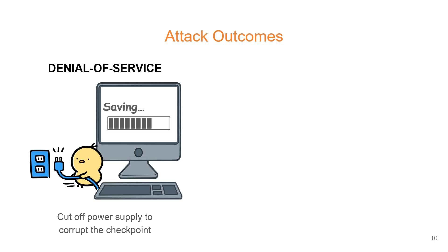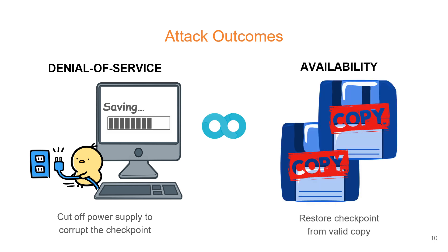Next, we have denial-of-service attacks, where an attacker with power control of the device can induce power cycles in the middle of the checkpointing process to corrupt the checkpointed state itself. This is countered by making sure that we have multiple copies of checkpoints stored in the device, restoring the checkpoint only from a valid copy. This is known as availability.